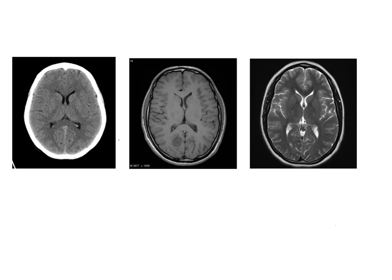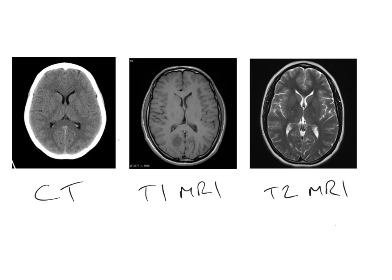Hello and welcome to this short mini-tutorial on the basic differences between CT and the different types of MRI scans. We have three images of three different imaging modalities of the brain, all at a similar level through the brain in the transverse plane. On the left is a CT image, in the middle is a T1 weighted MRI scan, and on the right is a T2 weighted MRI scan.